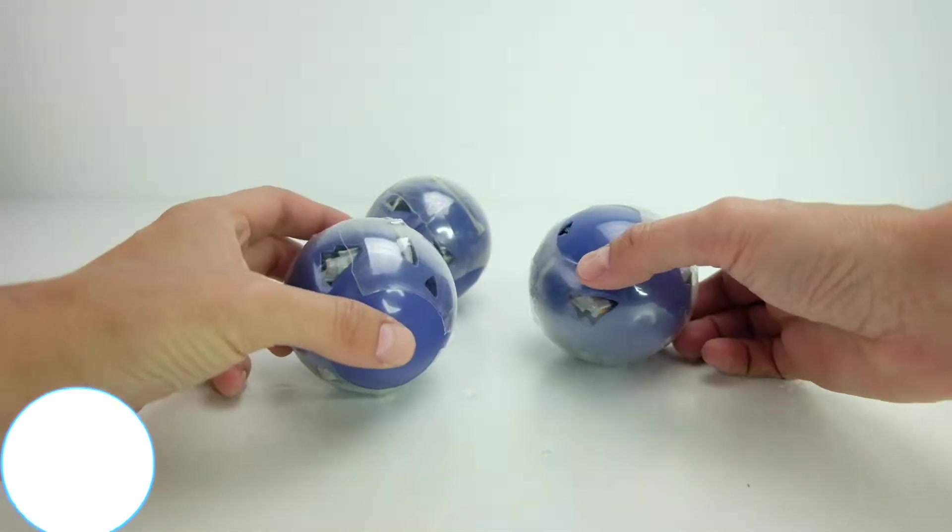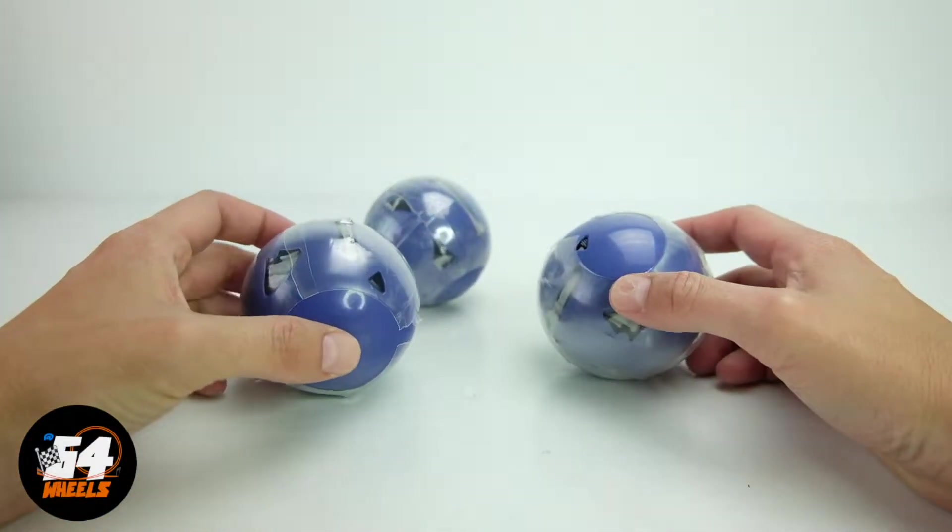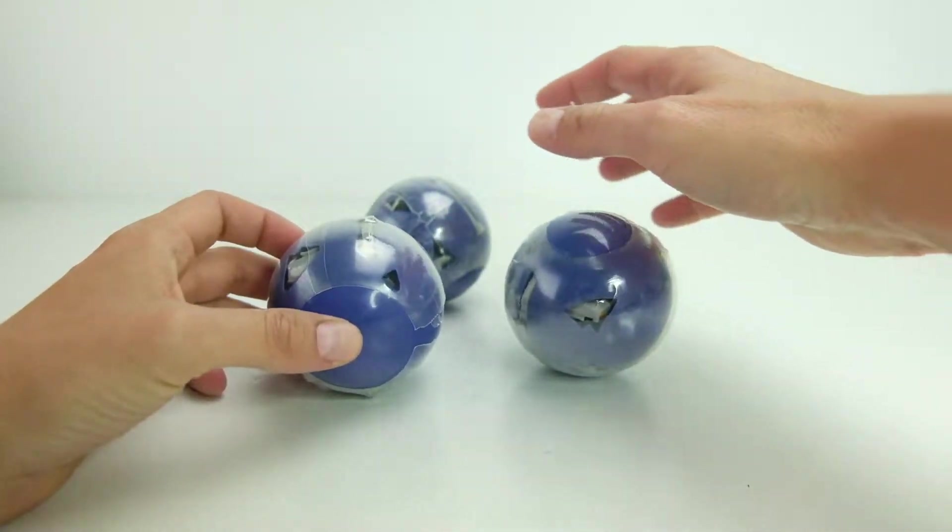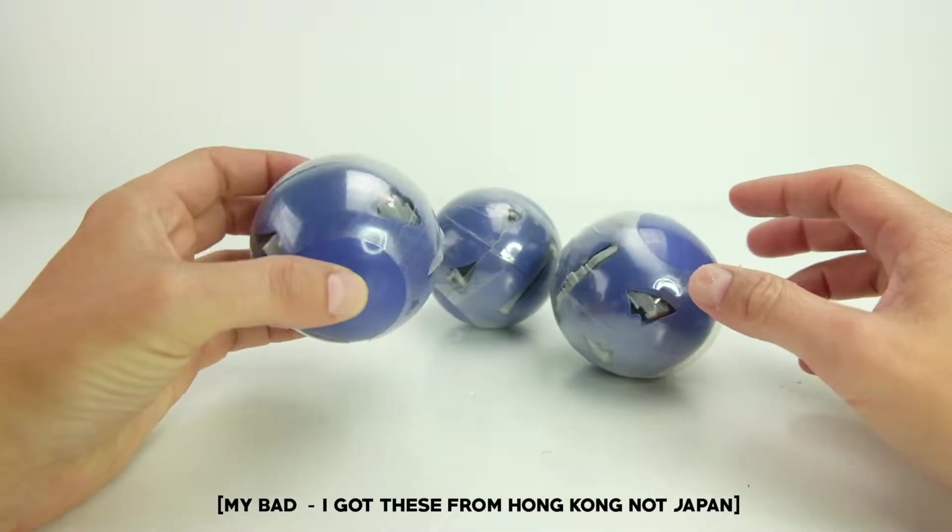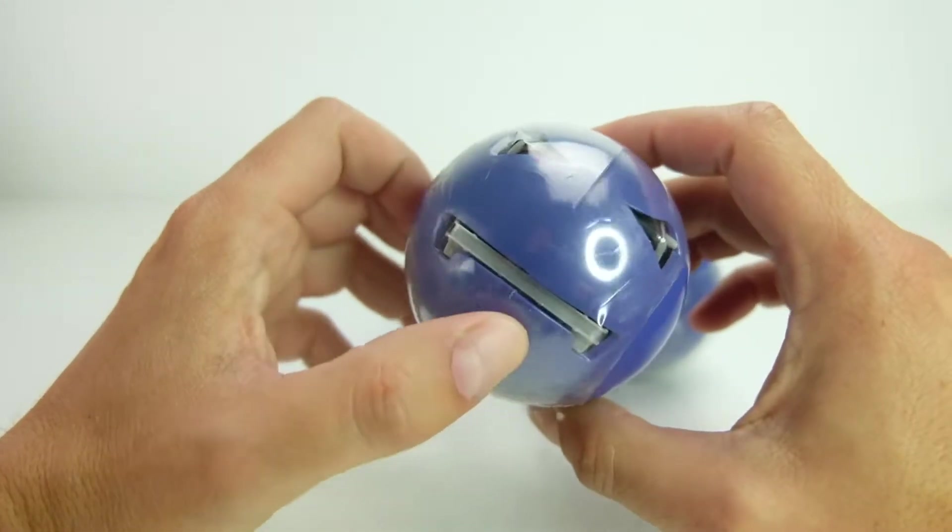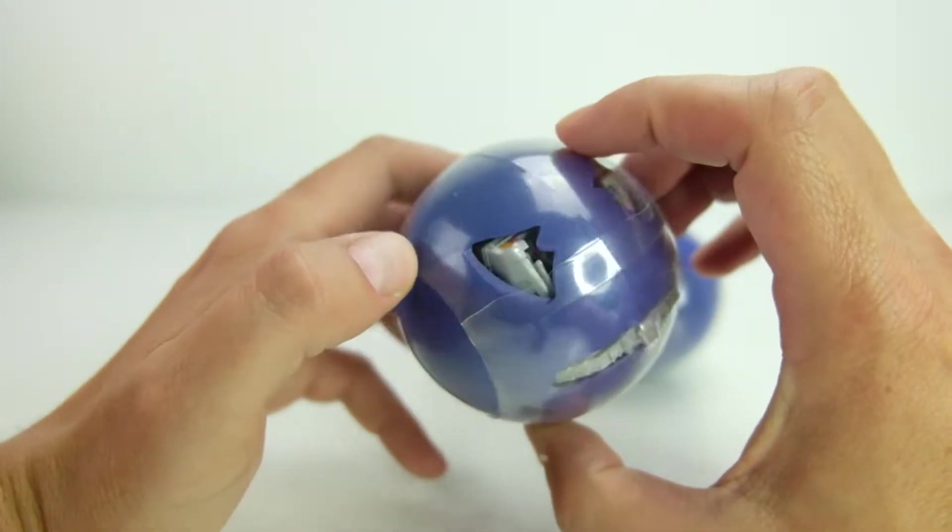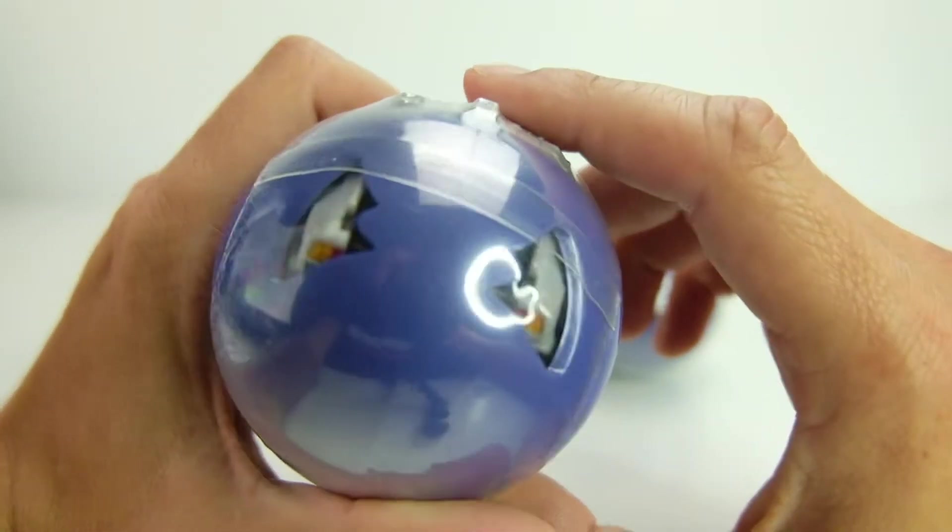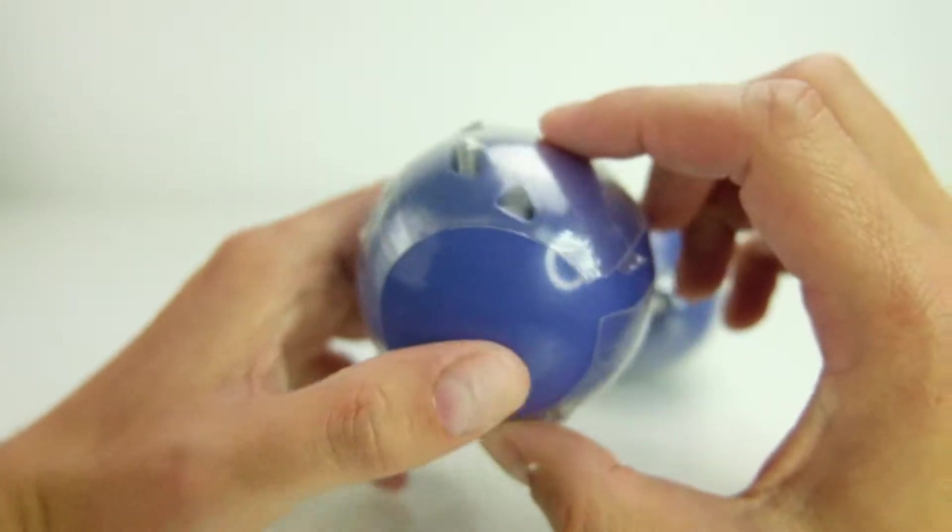All right, what is up everyone? It's Sam from 64 Wheels back with a very exciting Japanese Back to the Future exclusive. These are the Bandai capsule cars. They almost look like little pokeballs. There you can see the front bumper, there is the back of the DeLorean right there. Really exciting.